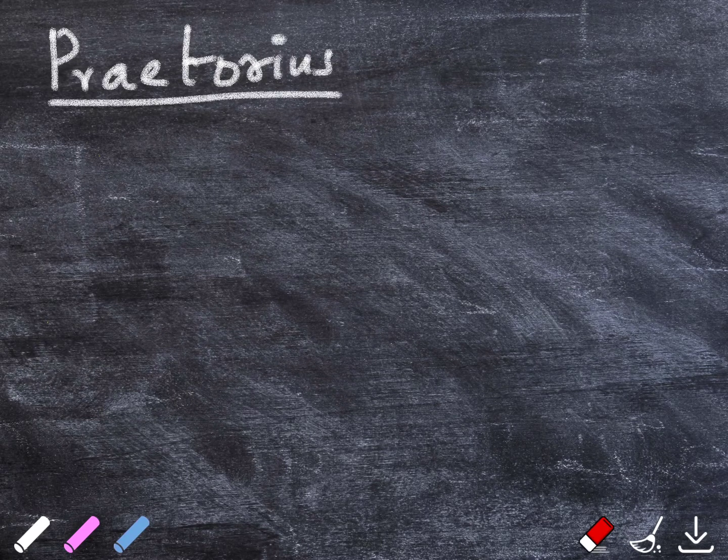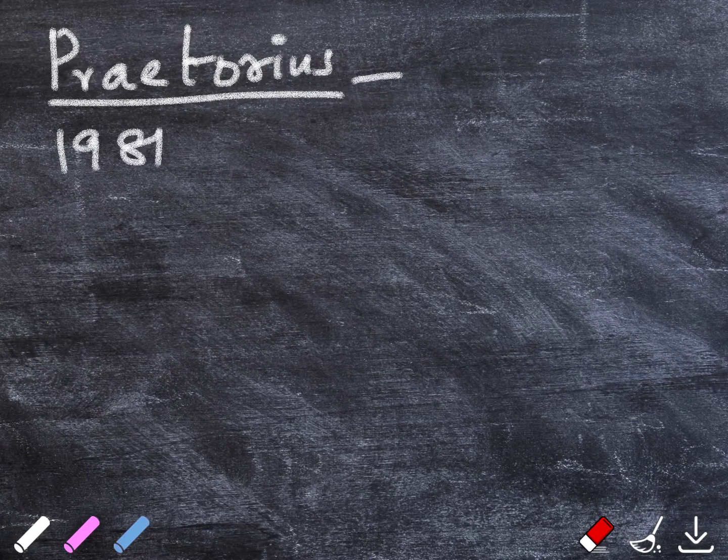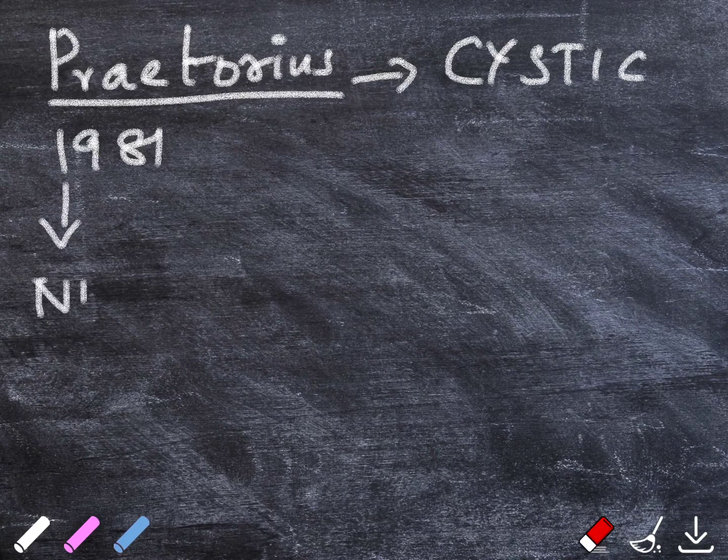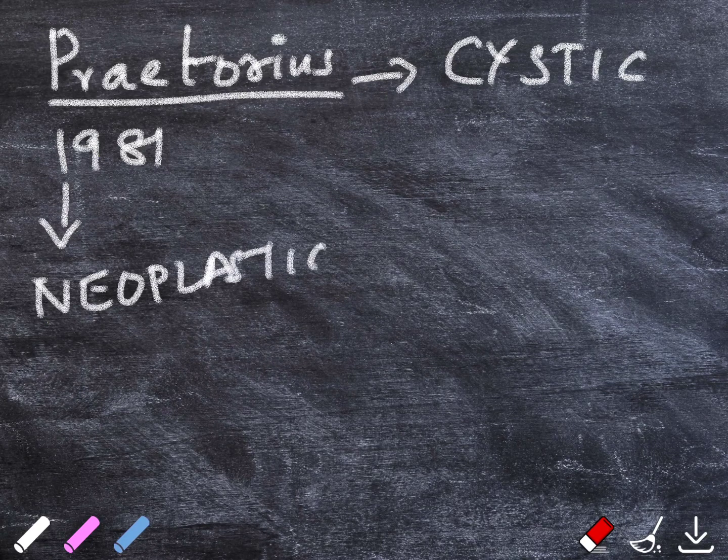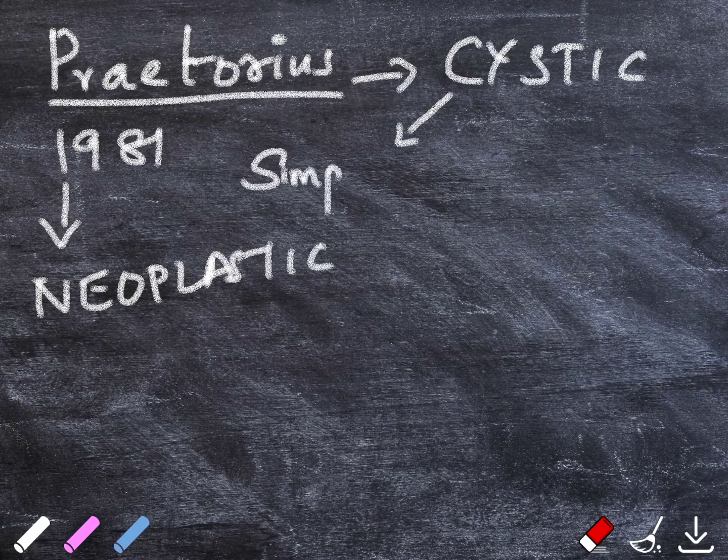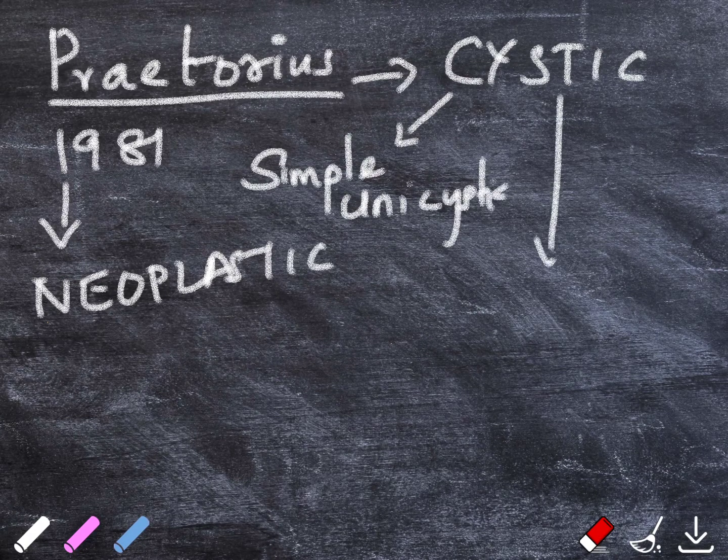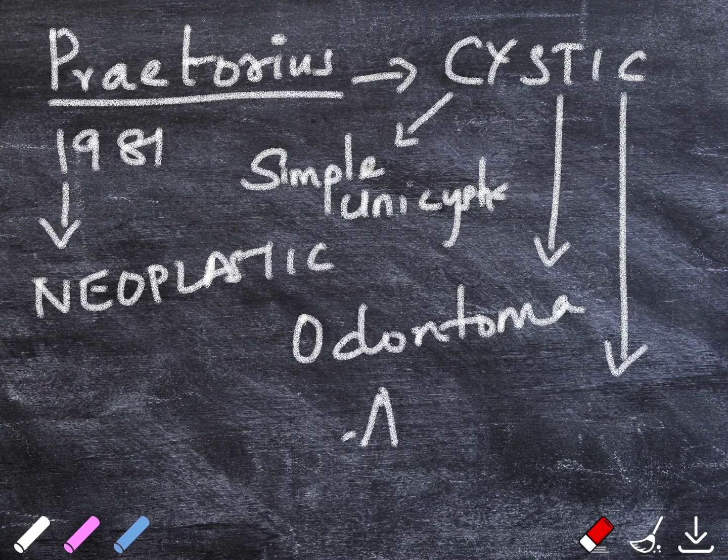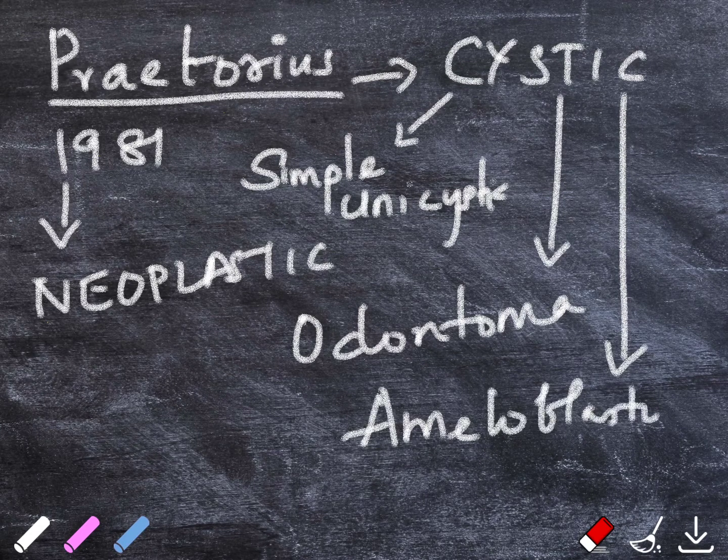Classification. The first one was described by Praetorius in 1981 who divided it into a cystic lesion and a neoplastic lesion. The cystic lesions were further divided into simple unicystic, an odontoma producing type, and lastly the ameloblastoma producing type. The neoplasm was the dentinogenic ghost cell tumor.